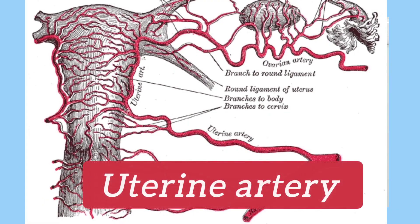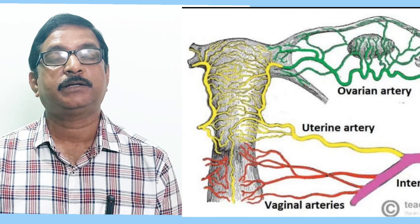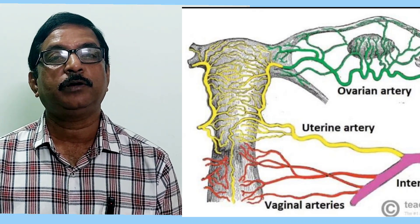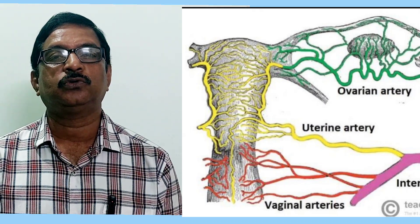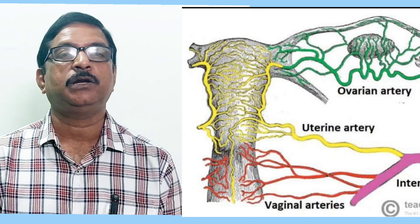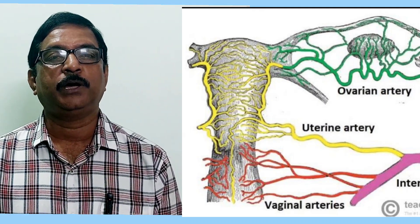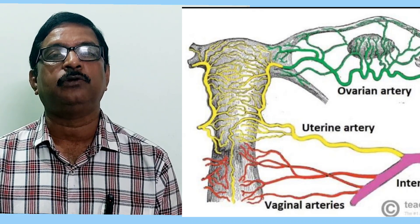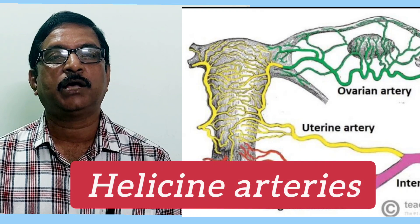The next tortuous artery in the body is the uterine artery. This artery is the artery of the female, and its tortuosity is mainly observed during pregnancy. As the uterus enlarges, the tortuosity develops during pregnancy particularly to overcome stretching. The branches of the uterine artery which enter into the uterine muscle wall — called the helicine arteries — are also tortuous.